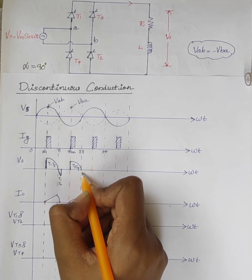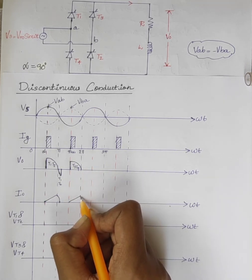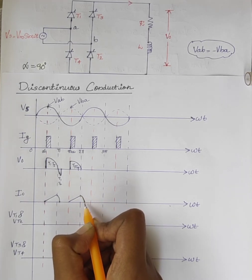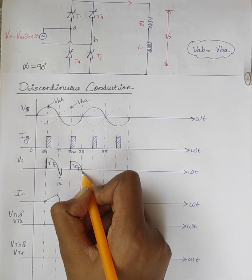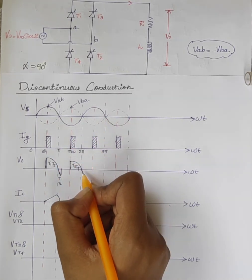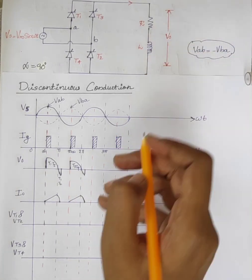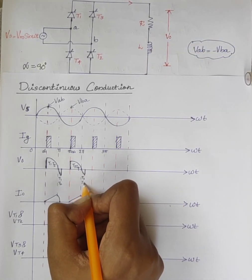At omega t equals 2 pi, due to the presence of inductor, output current decreases slowly to zero. So a negative voltage appears across the load. This is T3, T4.